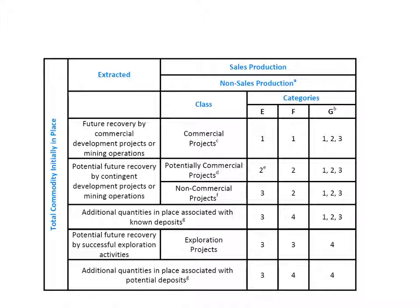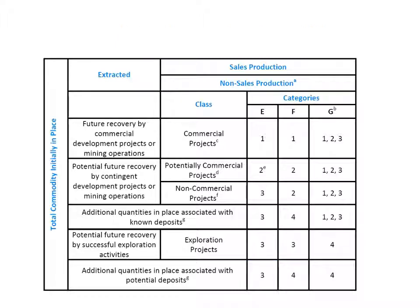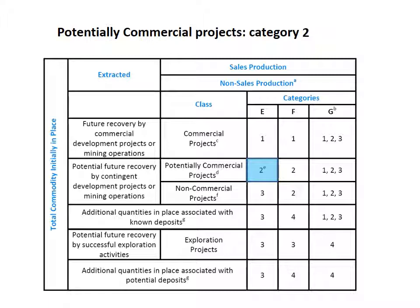An exploration project, of which the economic feasibility and development potential are uncertain and for which the geological knowledge is limited, can be classified as 3, 3, 4. For a potential commercial project, the economic viability is still uncertain and classifies as a 2. Equally, uncertainty about potential development classifies as a 2, and the geological knowledge could also be classified from 1 to 3.